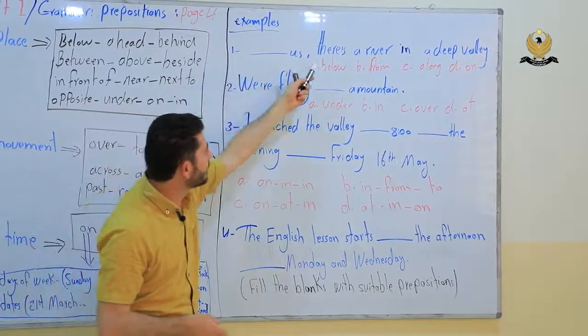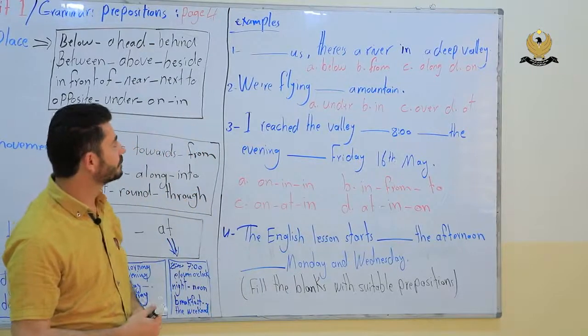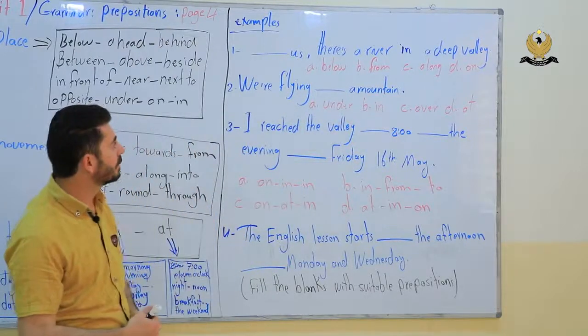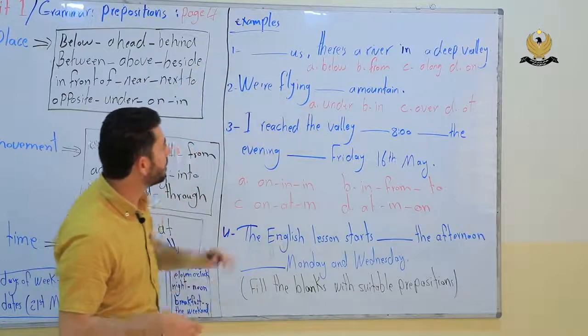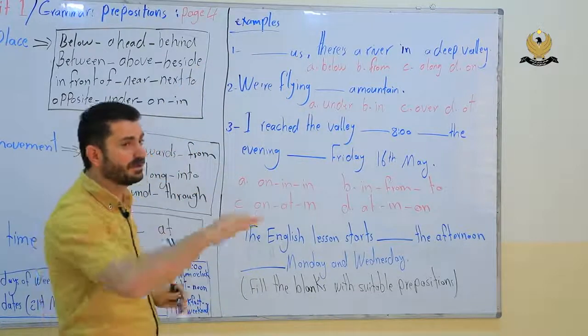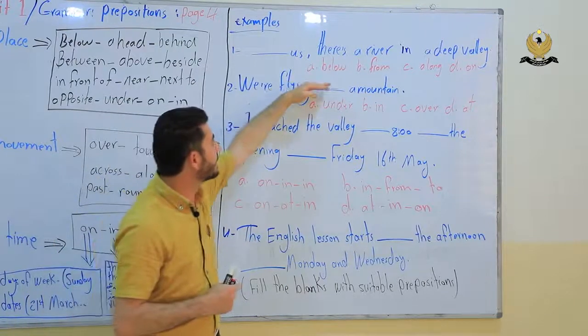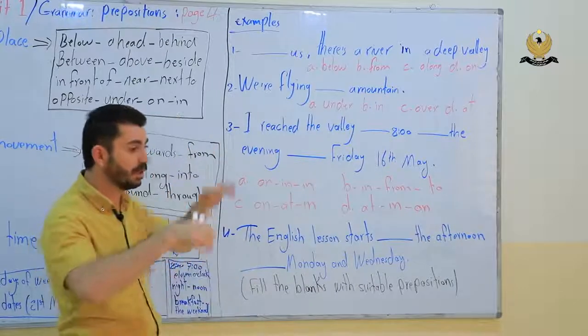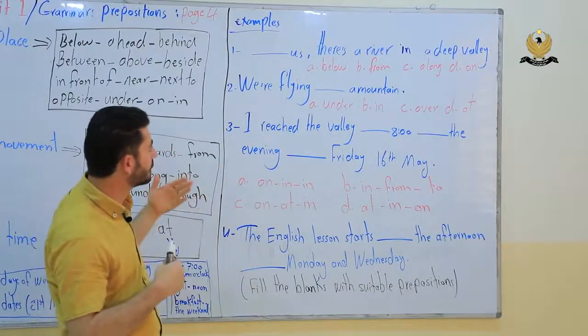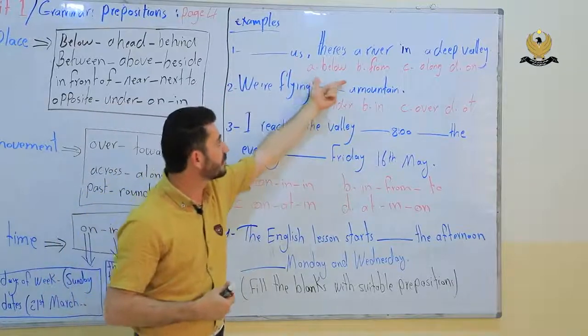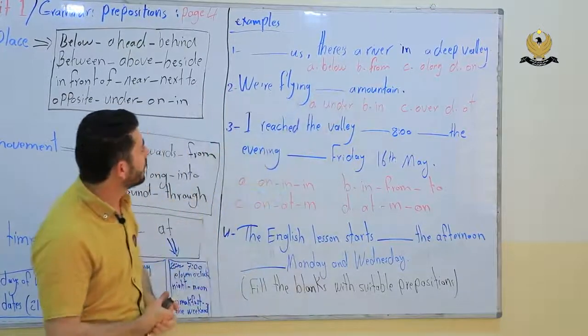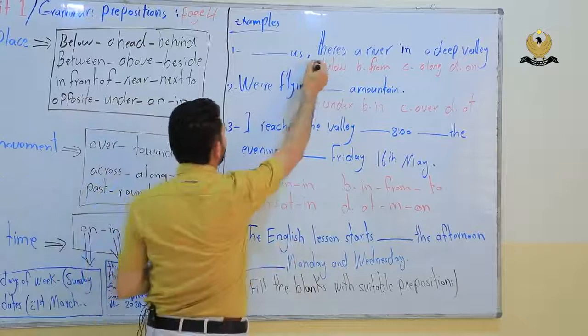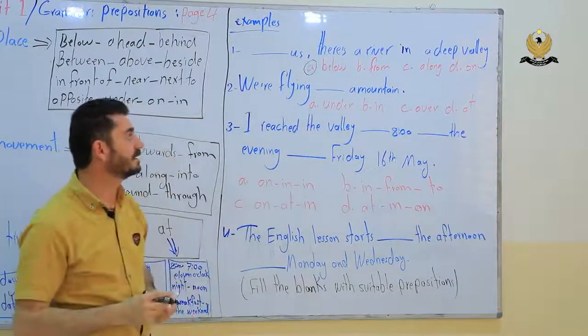Number 1: There is a river in a deep valley. The options are: A below, B from, C along and D on. There is a river below us. Below us, there is a river in a deep valley.